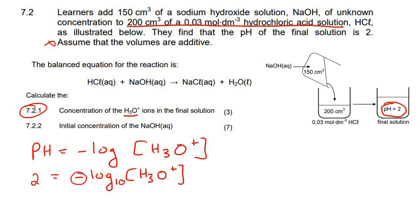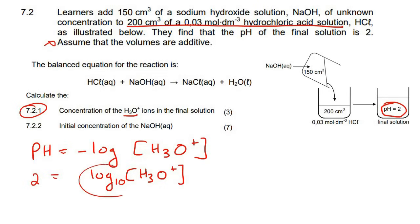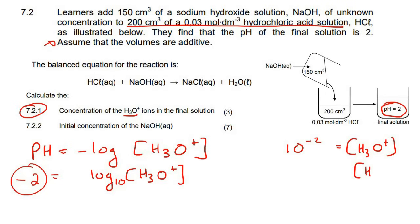When you have a log with no base given, it's always base 10. First, take the negative to the other side. Then using log rules, raise 10 to the power of −2. So the concentration of H3O+ equals 10⁻² = 0.01 mol/dm³.